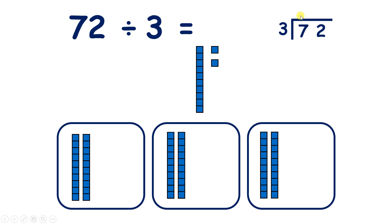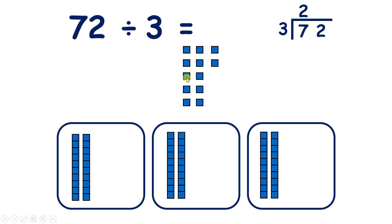We can write 2 above our tens column, because each group has two tens. What are we going to do with our 1 remaining 10? We can regroup our 10 to make 10 units, or exchange our 10 for 10 units. So now we have 12 units, and we write our 1 remainder from dividing 7 by 3 in front of our units, because we've exchanged it for 10 units.